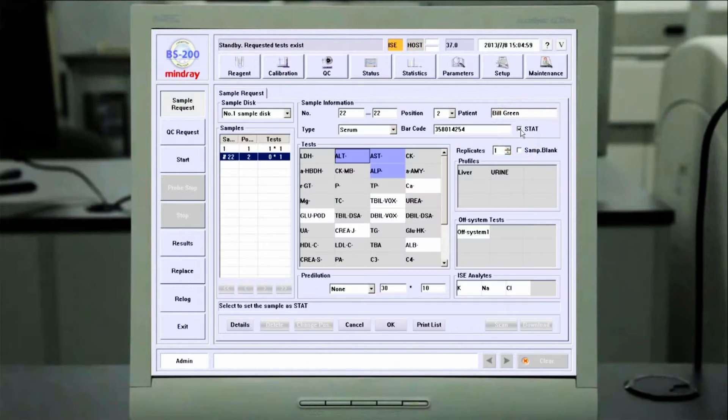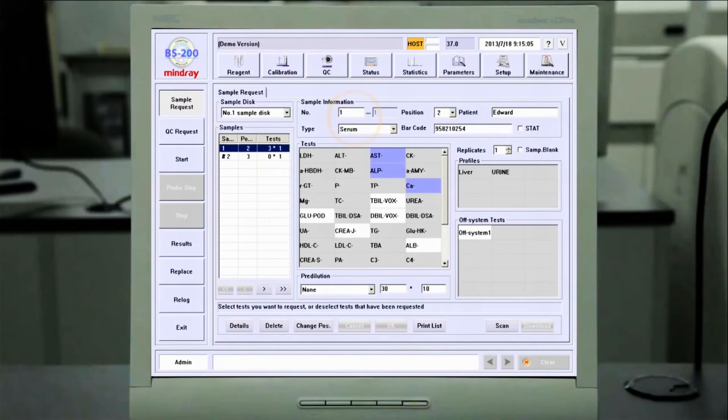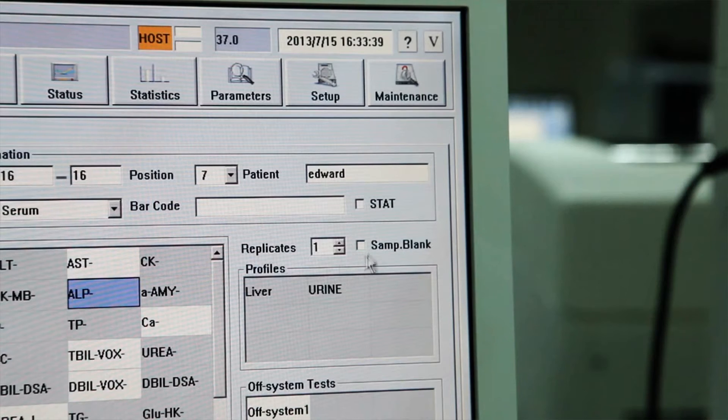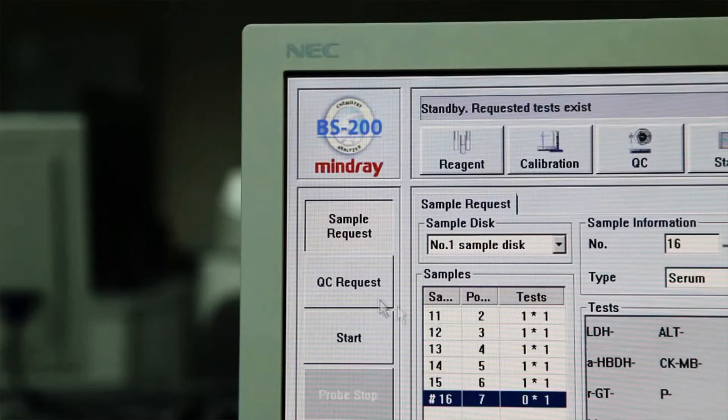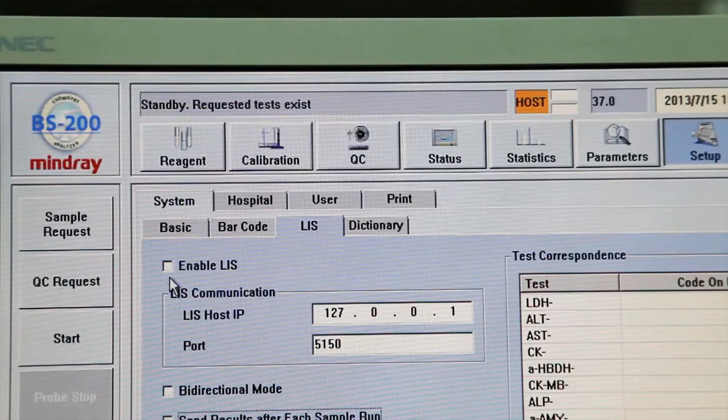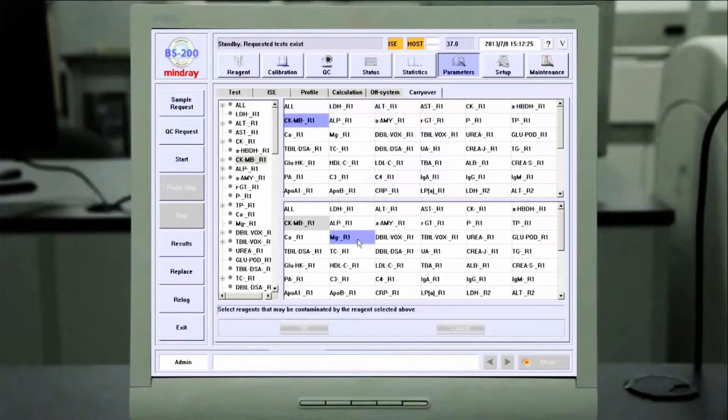The BS200 software supports STAT, routine priority, and batch testing. The STAT samples may be programmed in the sample request screen or through the LIS system. The BS200 software offers a unique carryover prevention function. It minimizes potential reagent carryover and ensures utmost result accuracy.